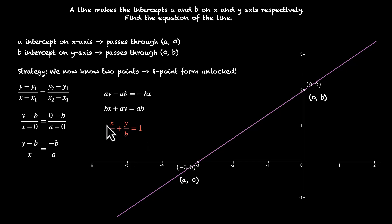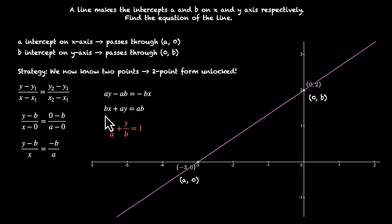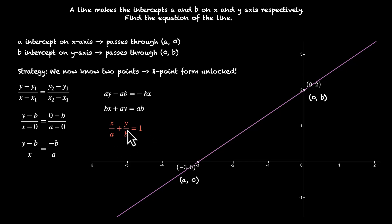This is even more beautiful — x divided by its intercept plus y divided by its intercept equals 1. This gives us the equation of a line in its intercept form. The condition is that a and b should not be 0, because you can't divide by 0 in math. This is the intercept form.